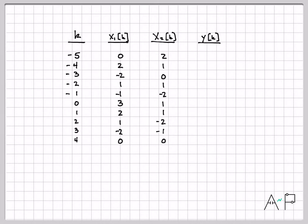And then creating y[k] is very easy because all I have to do is add these two numbers. So 0 plus 2 is 2, 2 plus 1 is 3, etc. And you just go down the list to get your signal y[k].